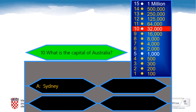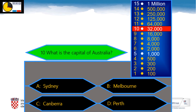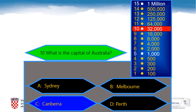Question number 10 is worth 32,000 points. What is the capital of Australia? A: Sydney, B: Melbourne, C: Canberra, D: Perth. And the correct answer is, of course, Canberra. Don't forget to keep track of your progress in your notebooks.